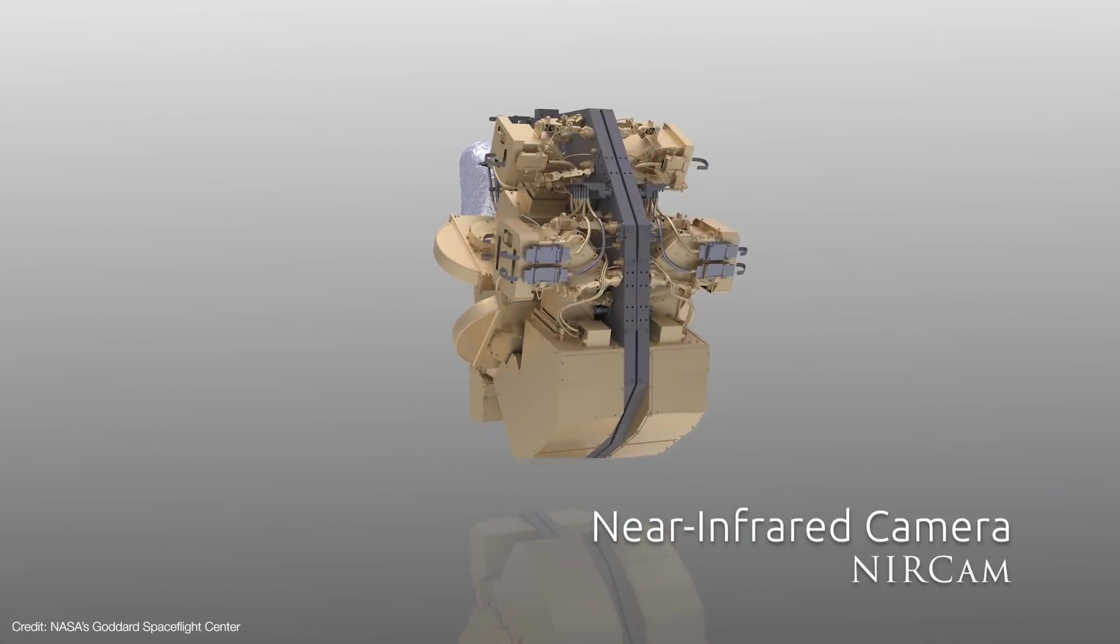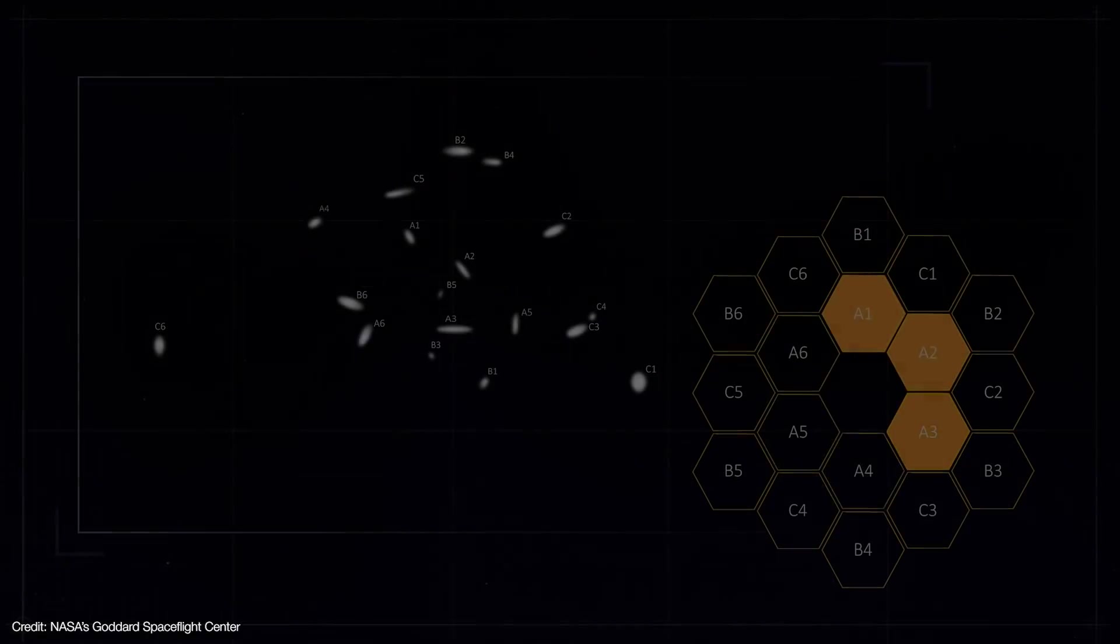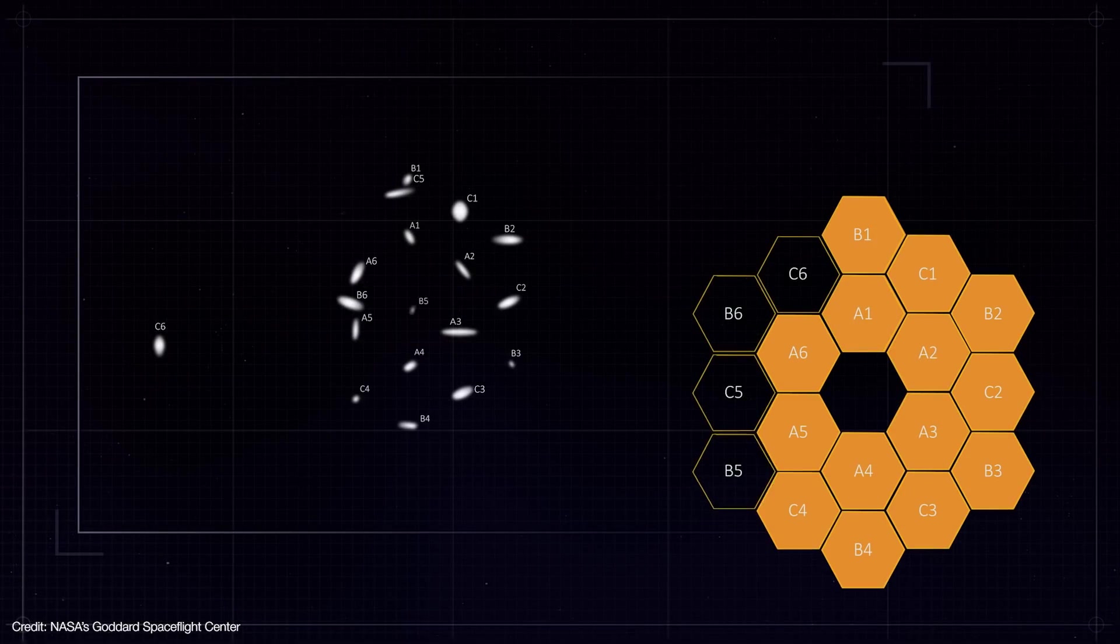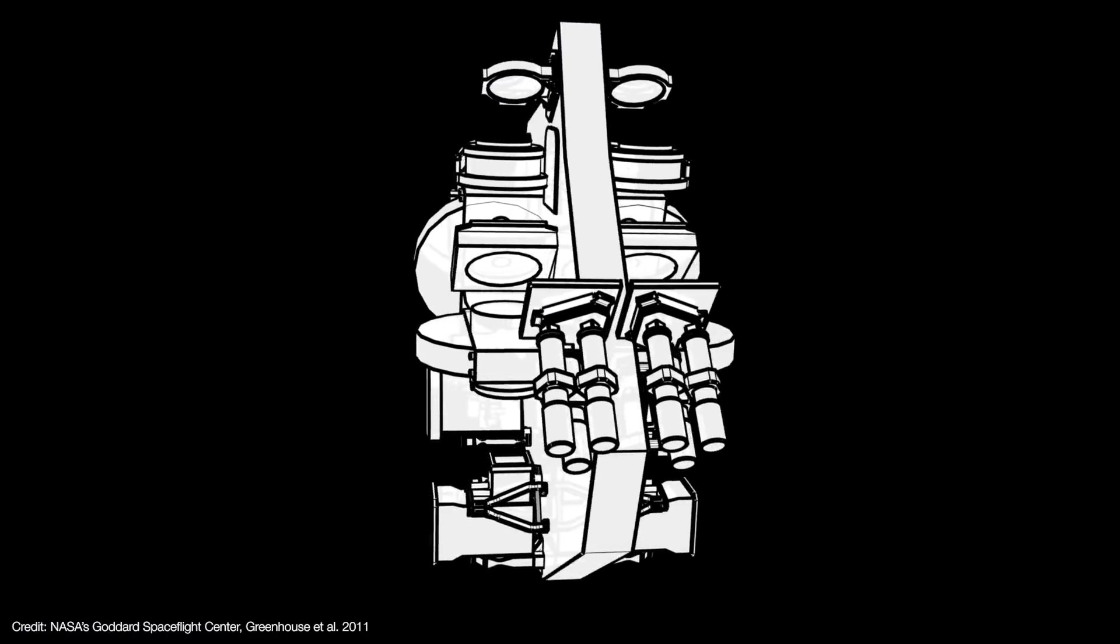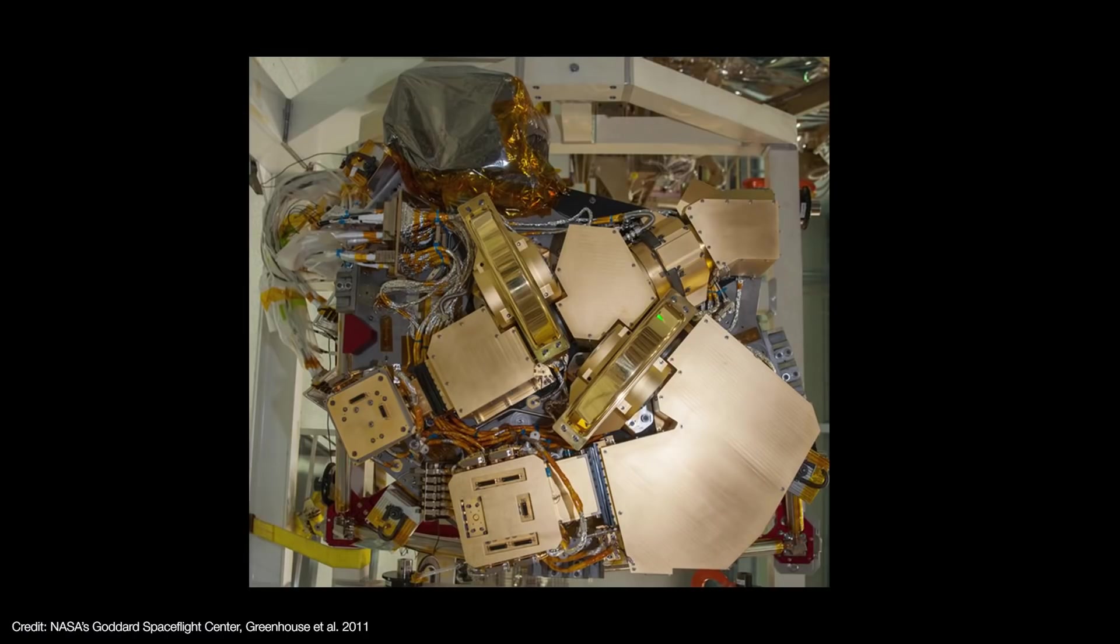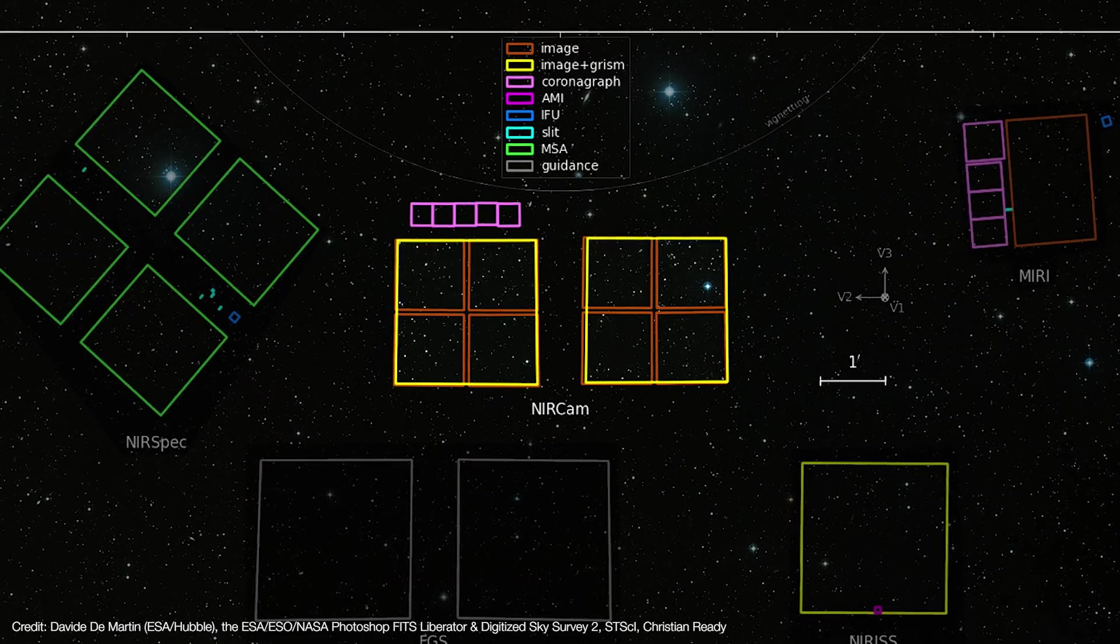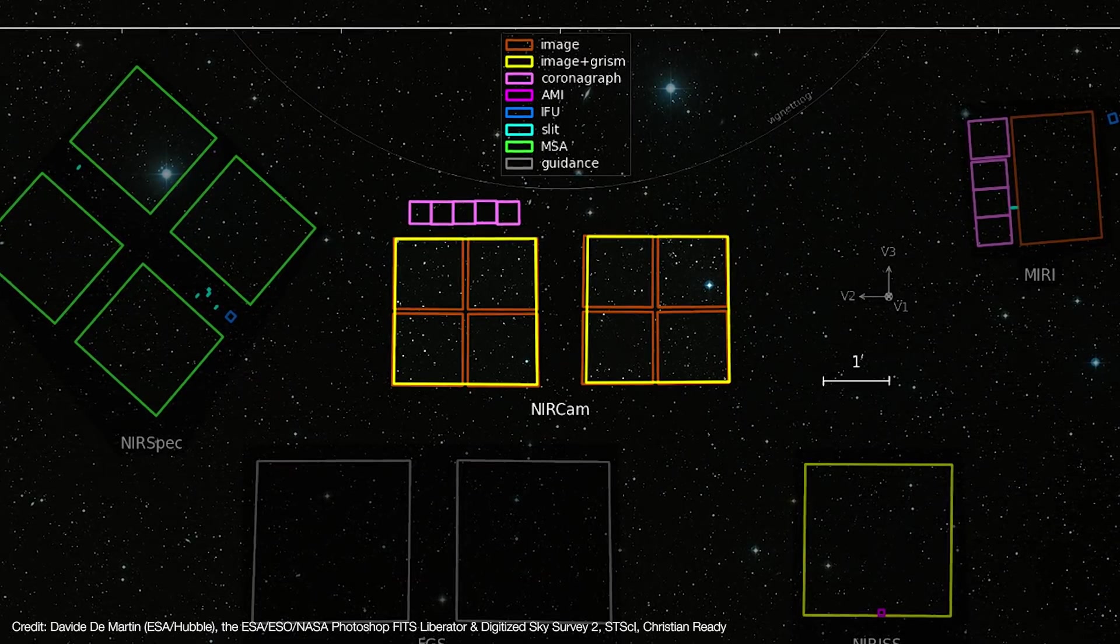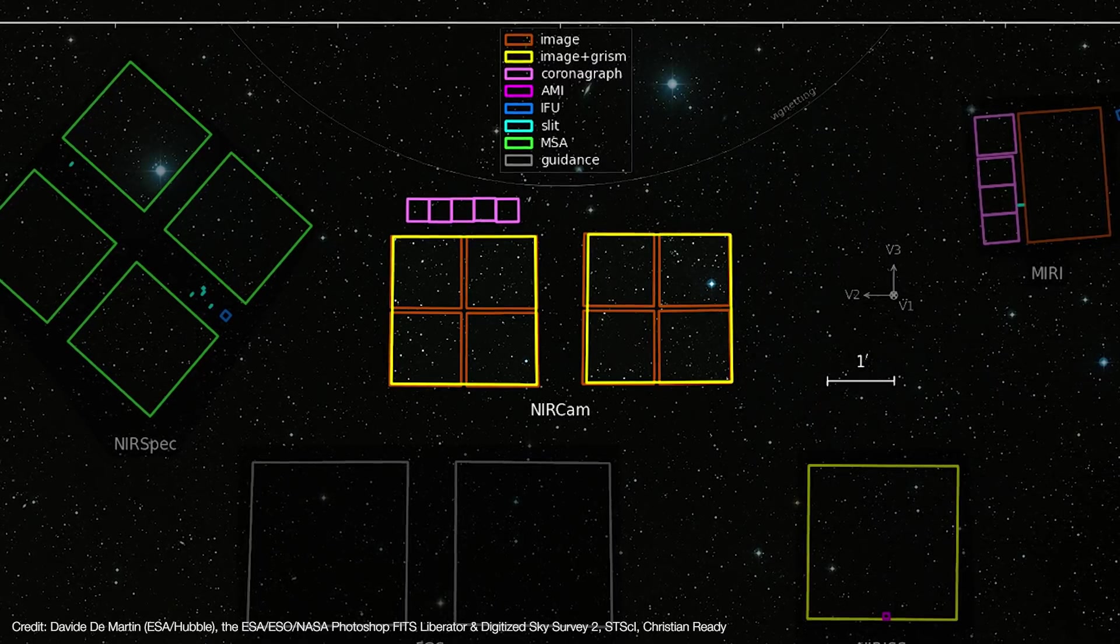First up is the near infrared camera or NIRCam. This is Webb's workhorse imager that's now being used for the initial mirror alignment process. NIRCam consists of two fully redundant modules that can be used simultaneously. Each module uses a beam splitter to send the light into a pair of short and long wavelength channels. So NIRCam is really two cameras side by side in two completely redundant modules, and each module has two channels for short and long wavelengths.